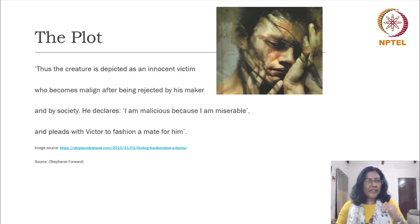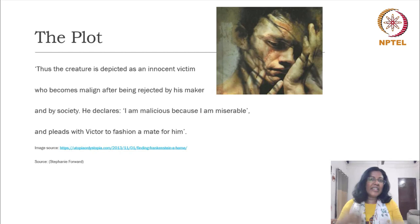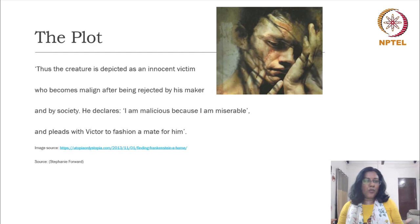This creature is depicted as an innocent victim who becomes dangerous, a threat to the security of human beings, after he has been rejected not only by his maker but by society as well — the society with whom he tries to relate in some ways. He declares that 'I am malicious because I am miserable.' He pleads with Victor at one point to fashion a mate for him, to create a female for him. He wants his own Eve.